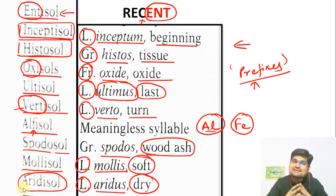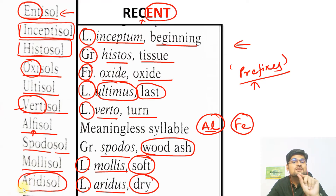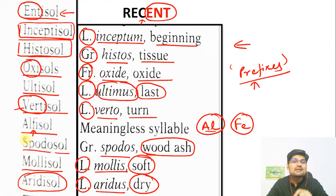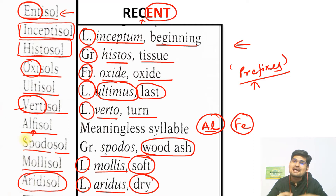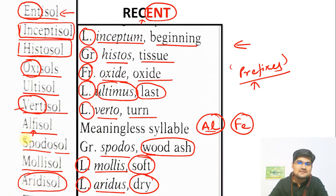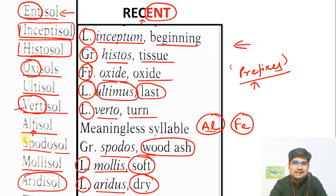If you want to learn the USDA soil classification system, you must understand these prefixes and their meanings. If you can decode the meaning, there is no need to memorize it — you can just remember the prefixes and it will come to your memory automatically what the characteristic of that particular soil is.